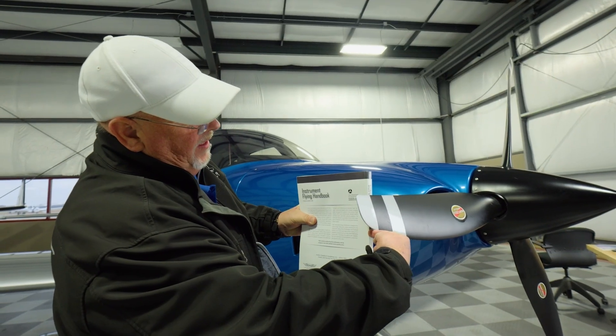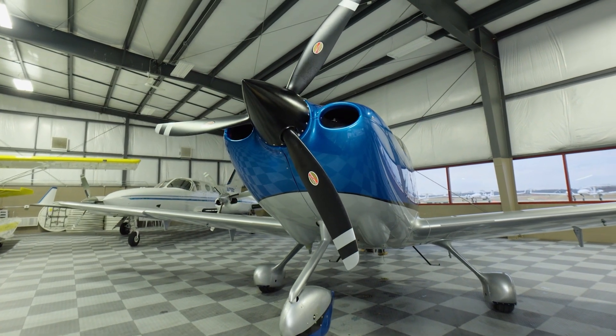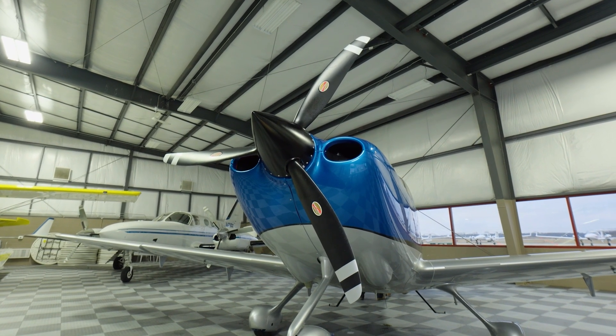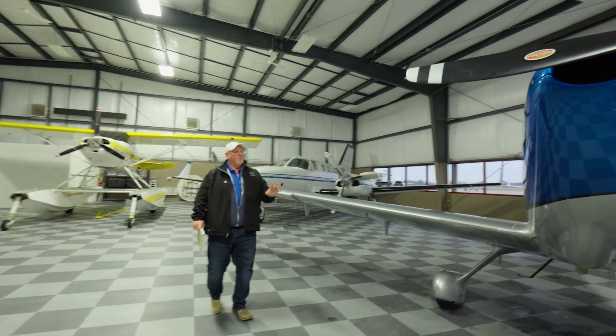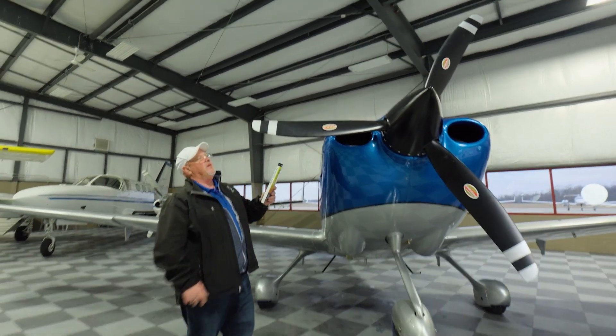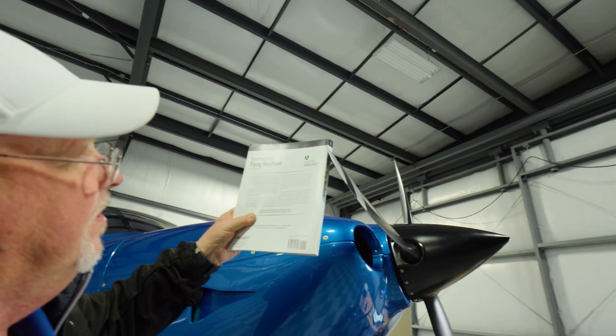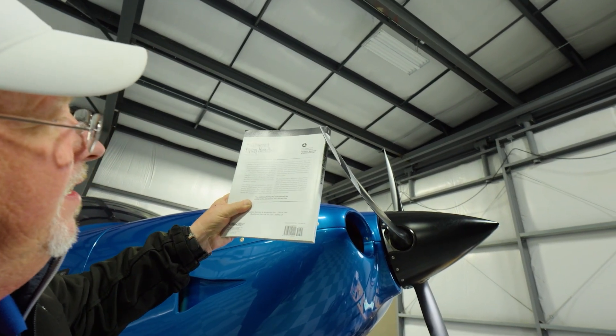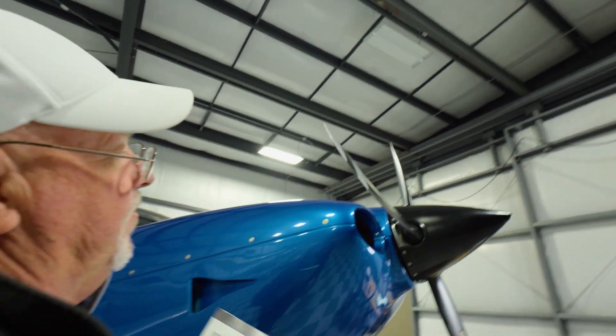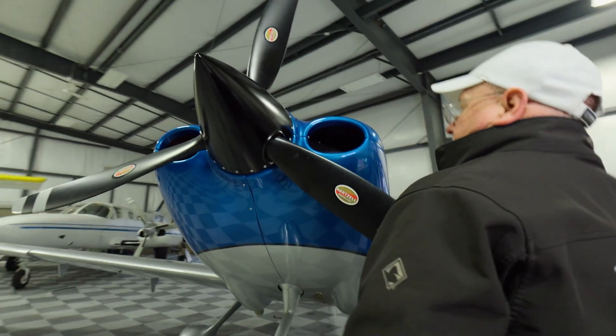But watch what happens when we raise this airplane up like it's climbing. So we're going to put this airplane in a pitch attitude. We've got this airplane now up in the air in a pitch attitude, very similar to what it would be like on a climb out. Now take a look at this angle of attack of this climbing side of the propeller. Look at that angle of attack, how much it's grown.